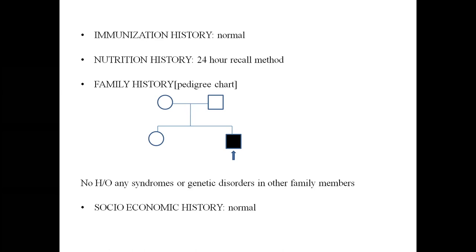Immunization history is normal. Since Down syndrome children are prone to recurrent RTIs, mention whether optional vaccines like pneumococcal vaccines were given. Nutritional history by 24-hour recall method should be written. Family history: a pedigree chart is a must, ideally including two generations. If similar syndromes or genetic disorders exist in other family members, they should be mentioned.